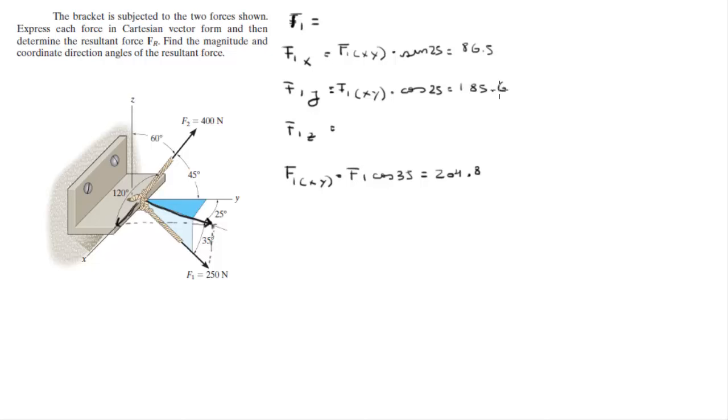And the Z is this vector right here which is F1 sine of 35, which comes out to be 143.4 negative because it's going in the negative Z direction. So the vector is 86.5i plus 185.6j minus 143.4k.